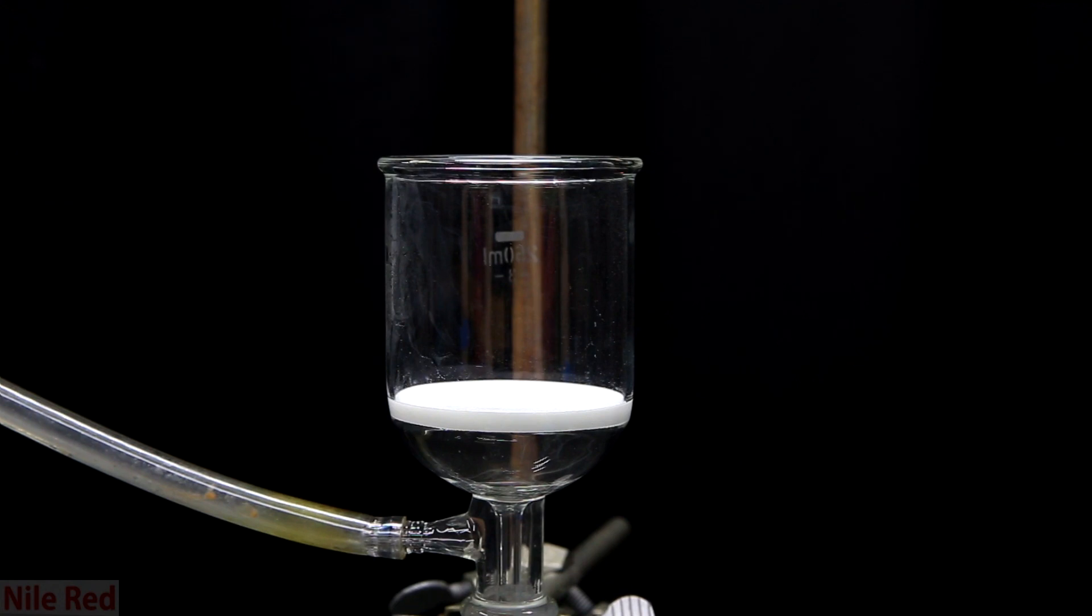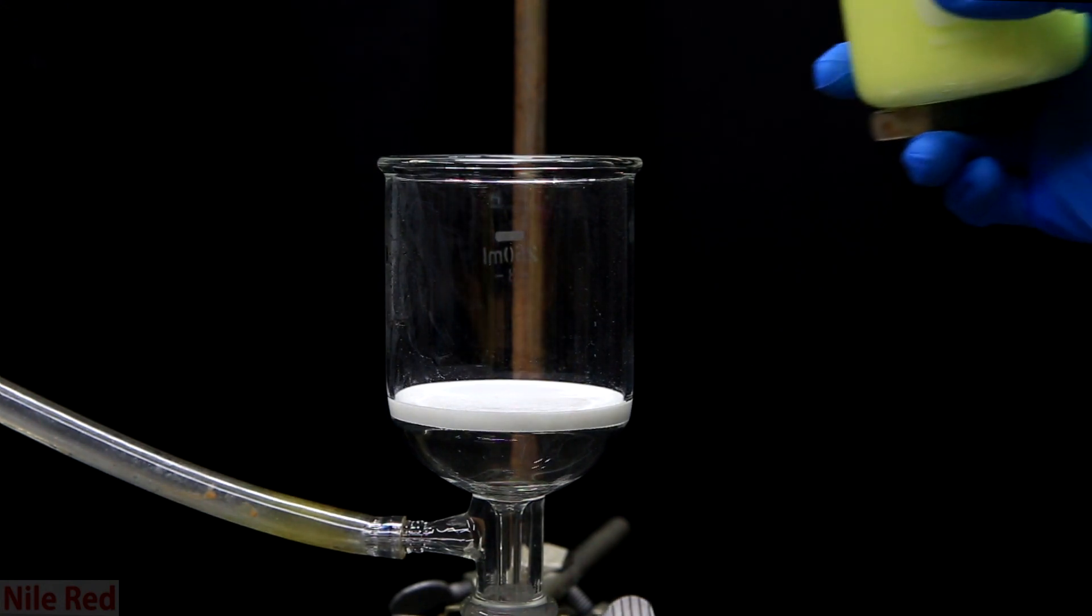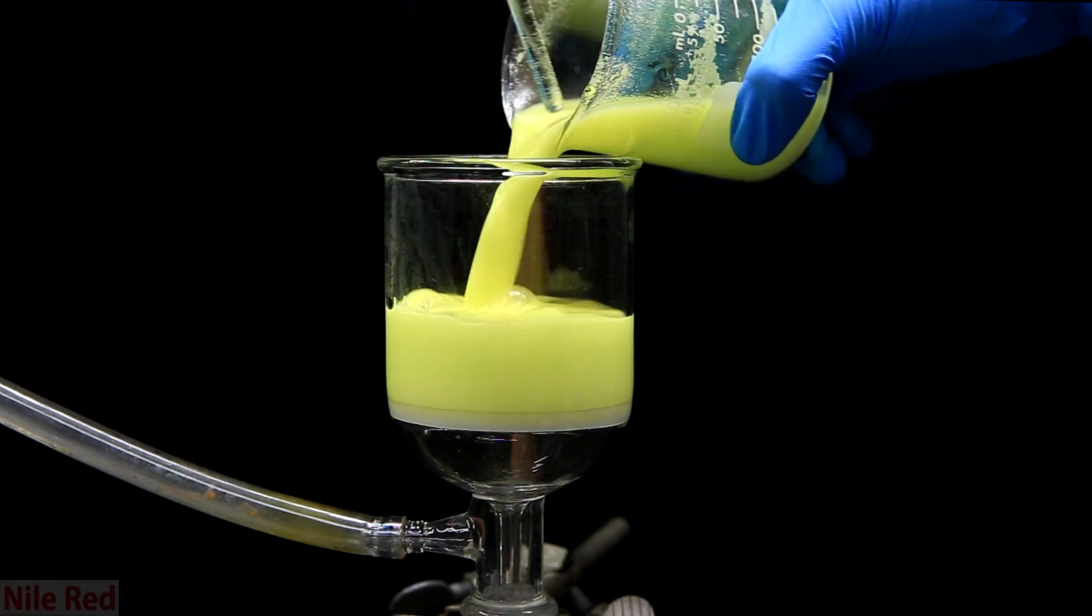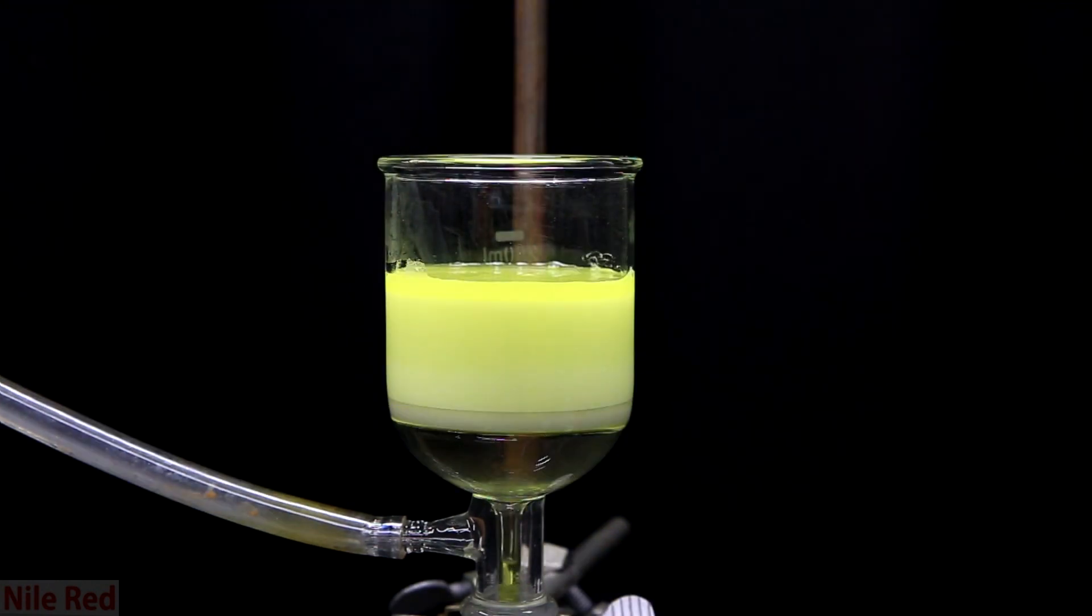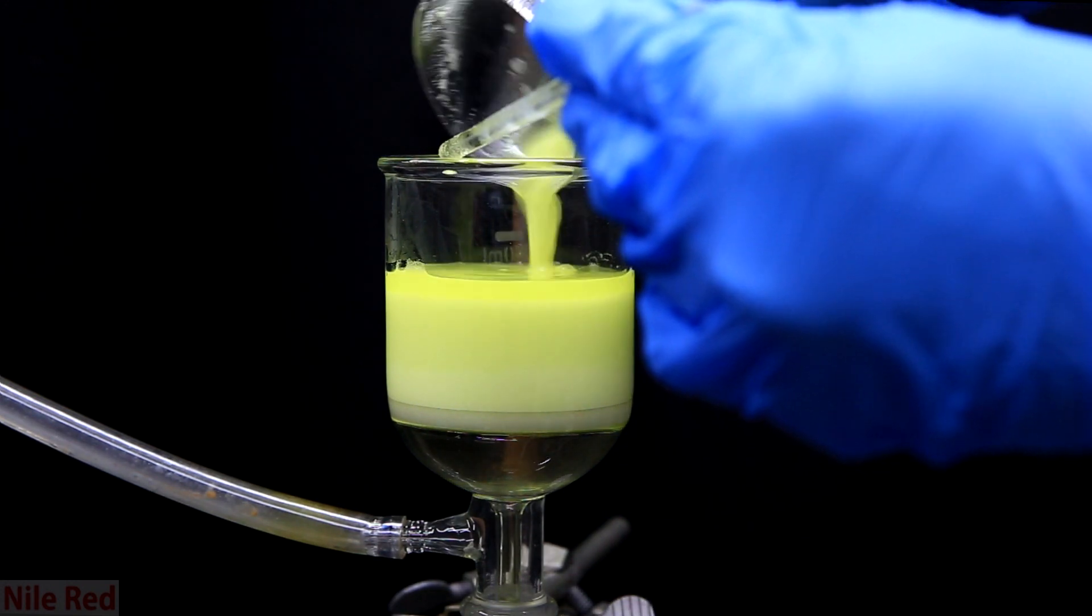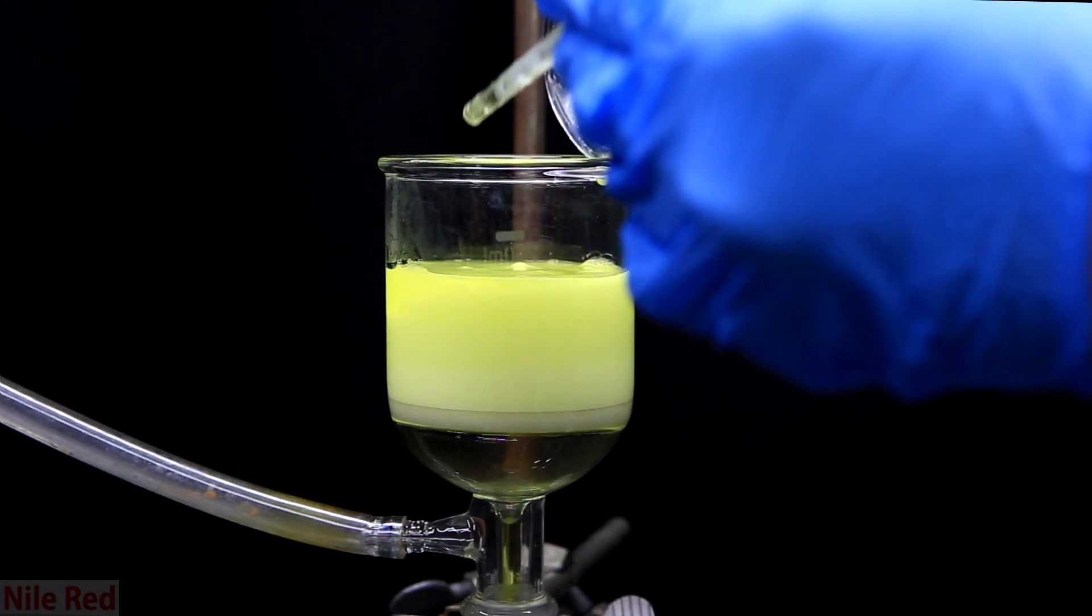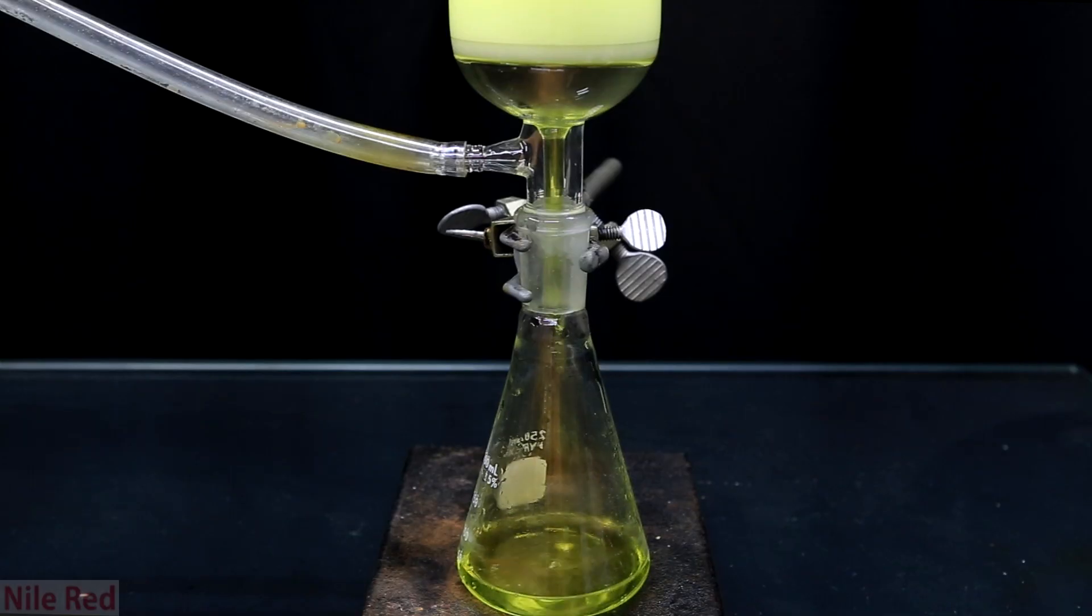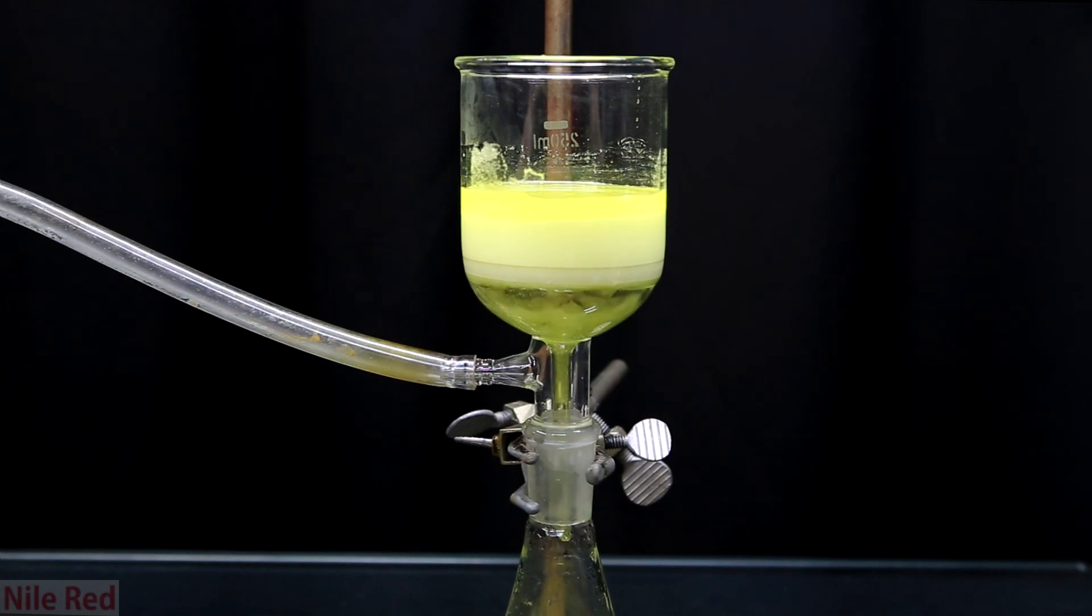This solid should consist mostly of 3-nitrophthalic acid so we filter it off. The mixture is stirred up and then it's poured into the filter. If you recall earlier, I said that we would be making both 4-nitrophthalic acid as well as 3-nitrophthalic acid. What's lucky for us though is that the 4-nitrophthalic acid is much more soluble in water and the 3-nitrophthalic acid is much less. So most of the solids should be our 3-nitrophthalic acid and most of the 4-nitrophthalic acid should be dissolved in the liquid.